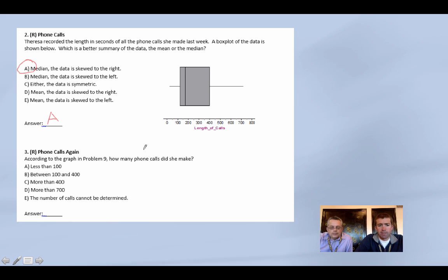So here we get phone calls again. According to the graph from problem nine, how many phone calls did she make? I'm going to guess that's this graph right up here, even though it was problem two. How many phone calls did she make? Well, I don't really know, because this is length of calls. Not the number of calls, the length of calls. I'm going to think it's E. It is, it cannot be determined. That's not part of the graph. So remember, unless they tell us, we don't know how many calls we make.